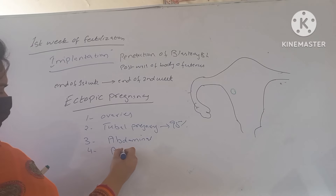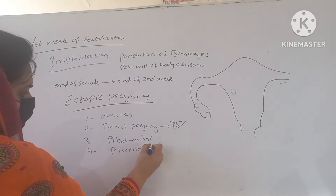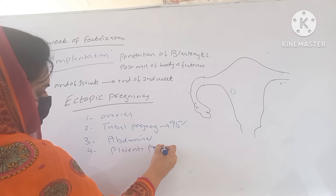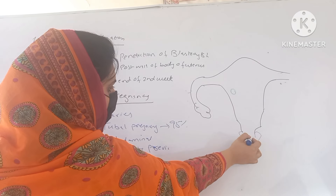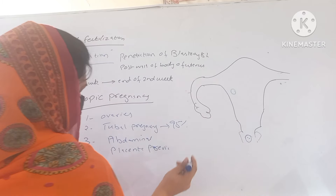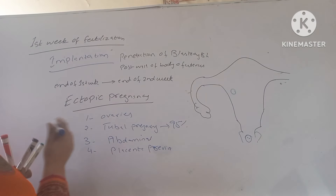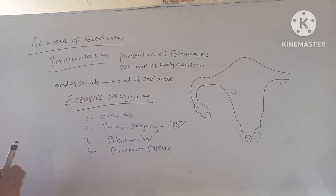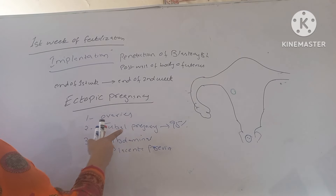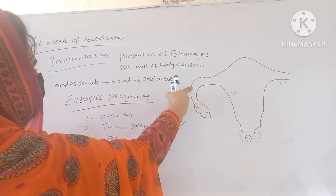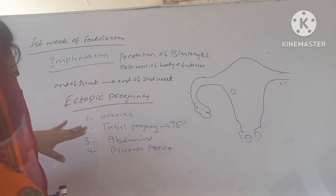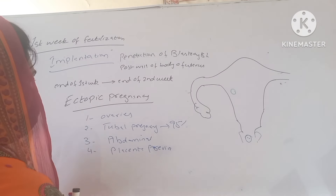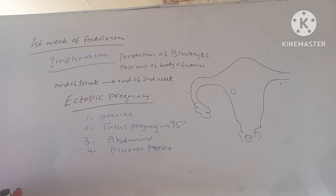We also have placenta previa. If the implantation occurs at the level of the internal os, then placenta previa is formed. So these are the few types of ectopic pregnancy, in which the most common is the tubal pregnancy, occurring in the isthmus or ampulla of the fallopian tube. This is diagnosed very early. I hope you understand the implantation.